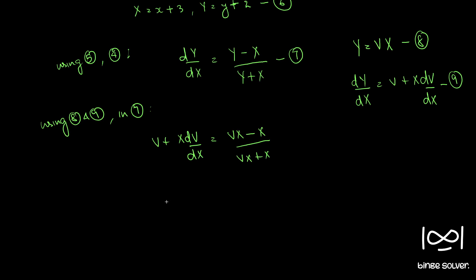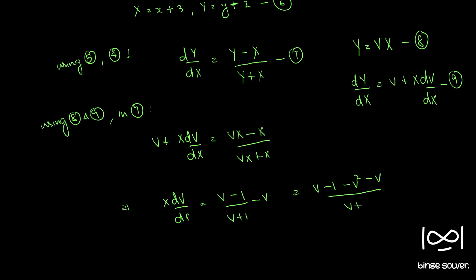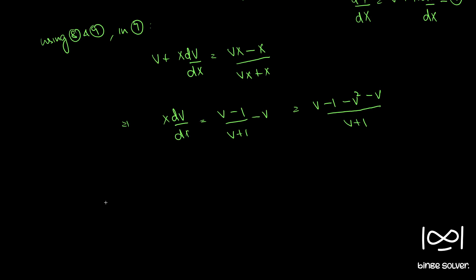Cancelling out X from both numerator and denominator and bringing v to the right-hand side, we have X dv by dX equal to (v minus 1) by (v plus 1) minus v. Simplifying, this gives X dv by dX equal to (v minus 1 minus v squared minus v) by (v plus 1), which simplifies to X dv by dX equal to (minus 1 minus v squared) by (v plus 1).